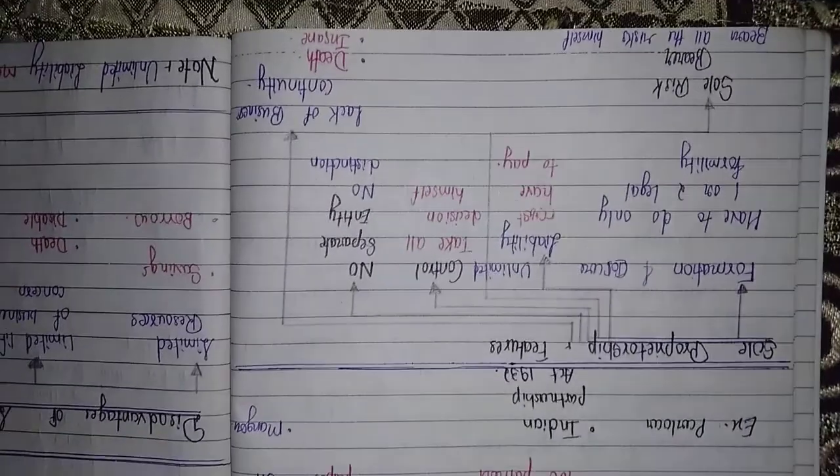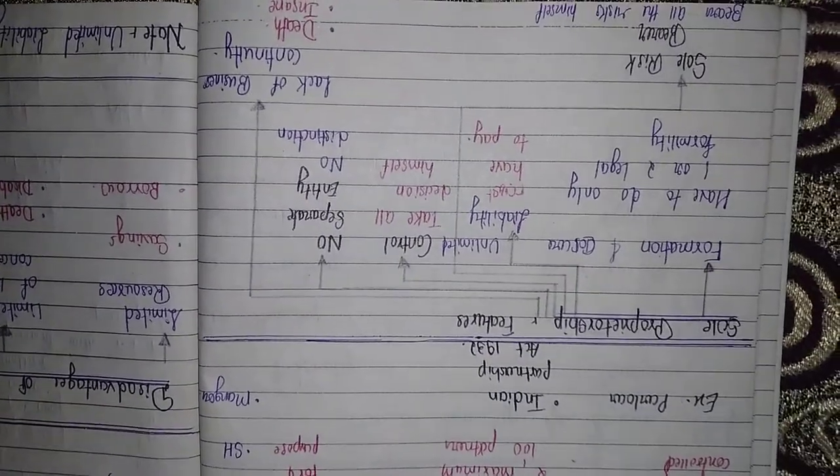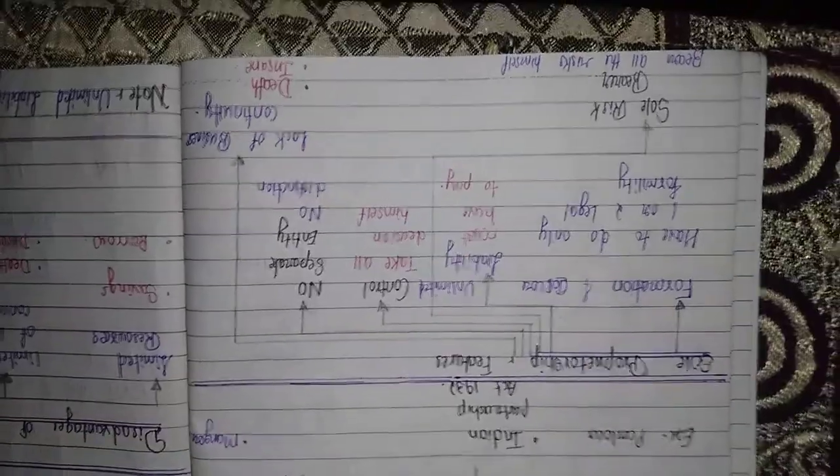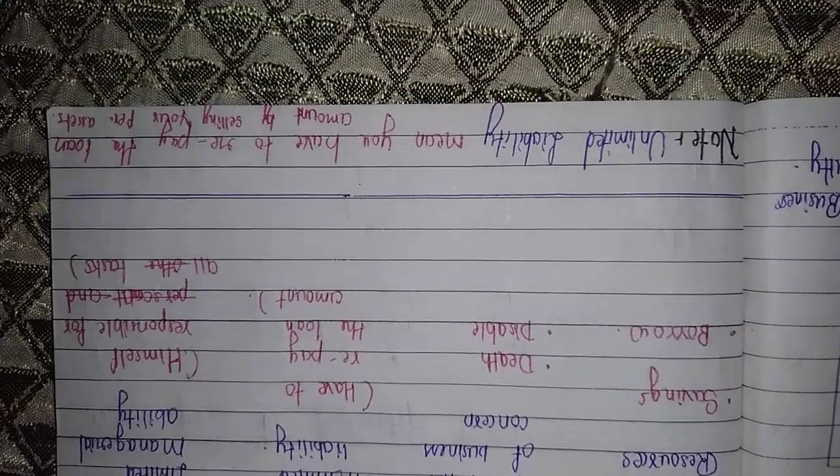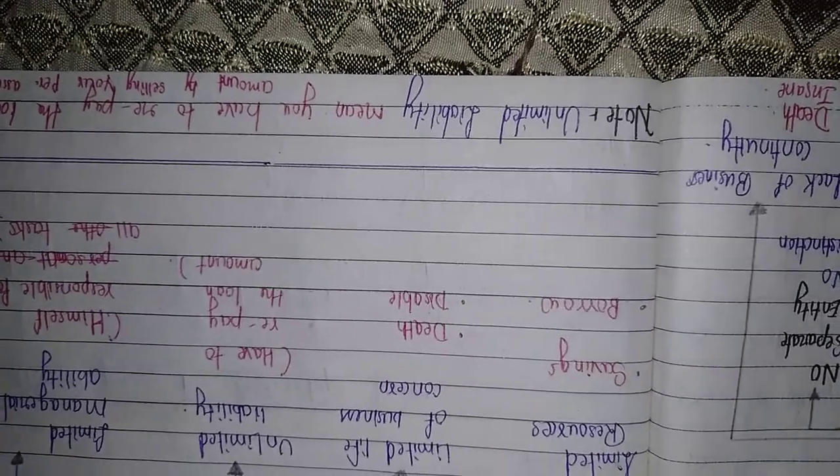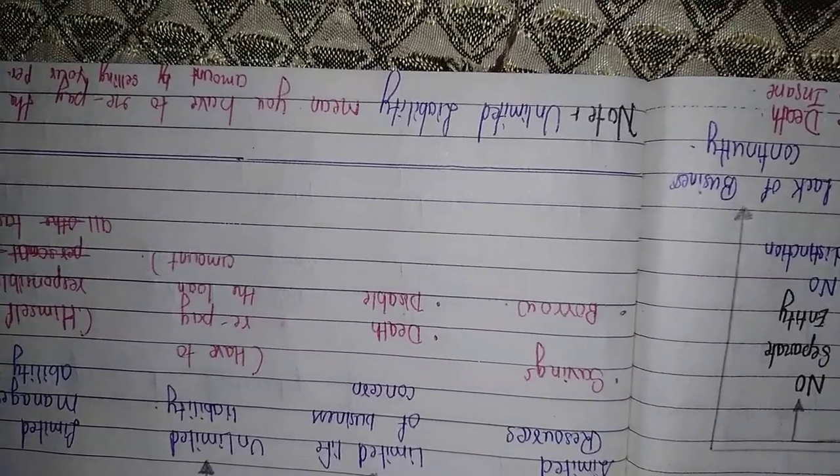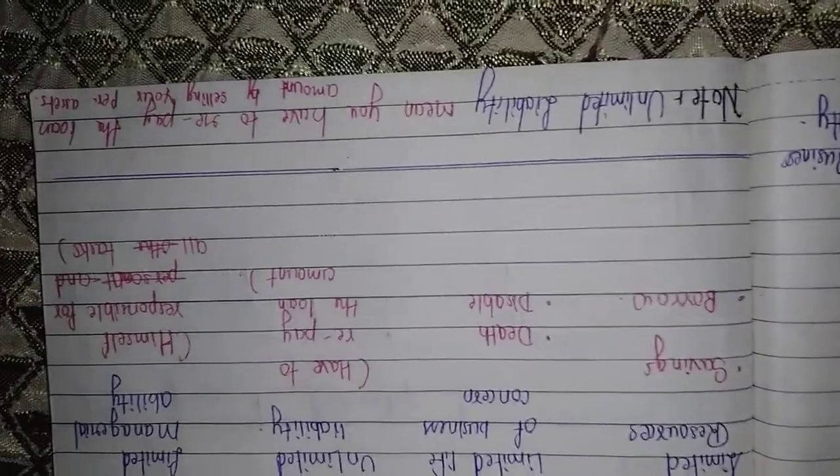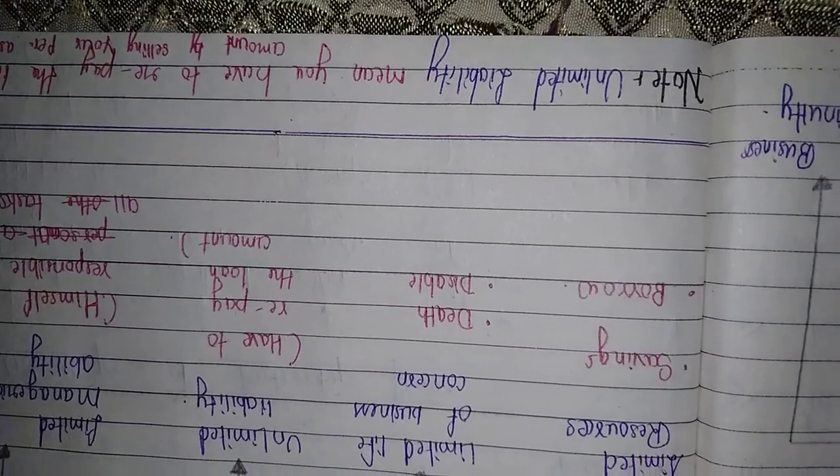Second one is unlimited liabilities. What is the meaning of unlimited liabilities? Unlimited liabilities means you have to pay the loan or you have to pay your liabilities by selling your personal assets, like your furniture, etc.